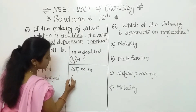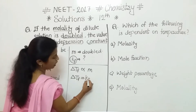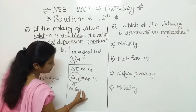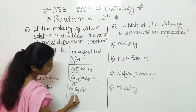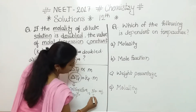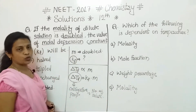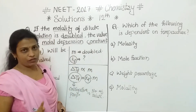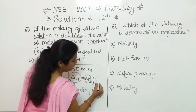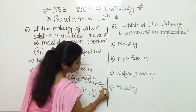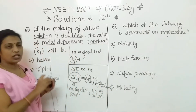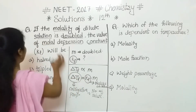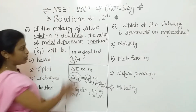Removing the proportionality sign, delta Tf is equal to KF into M. Depression in freezing point is a colligative property which depends on the number of solute particles. But KF — the molal depression constant — and KB — the molal elevation constant — both depend on the nature of the solvent, not on concentration. So if we change the concentration, there will be no effect on KF. The answer is: KF remains unchanged.